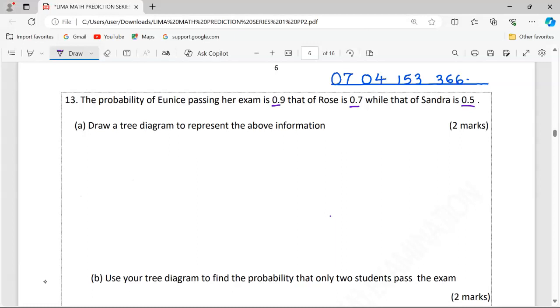These are events in which the occurrence of one eliminates the occurrence of the other. For example, when we start with Eunice in the drawing of the diagram, we will start by talking about Eunice passing and Eunice failing. So, Eunice can pass or fail.